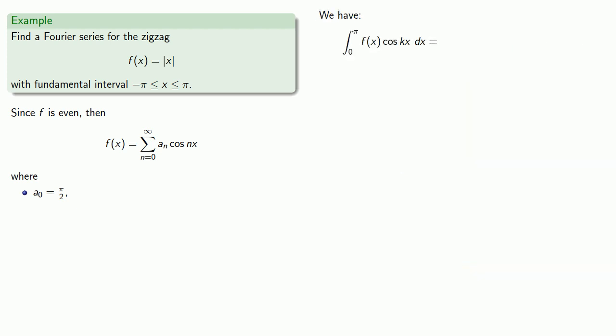And again, the function is the absolute value function, but at the interval between zero and π, that absolute value function is just x. So to evaluate the integral from zero to π of x cosine kx, we'll use integration by parts.